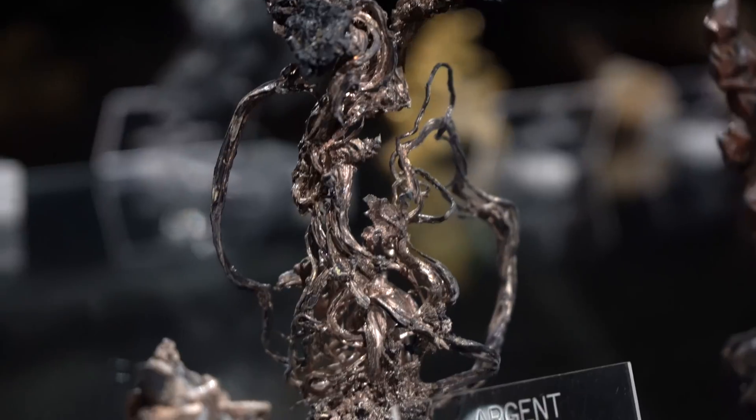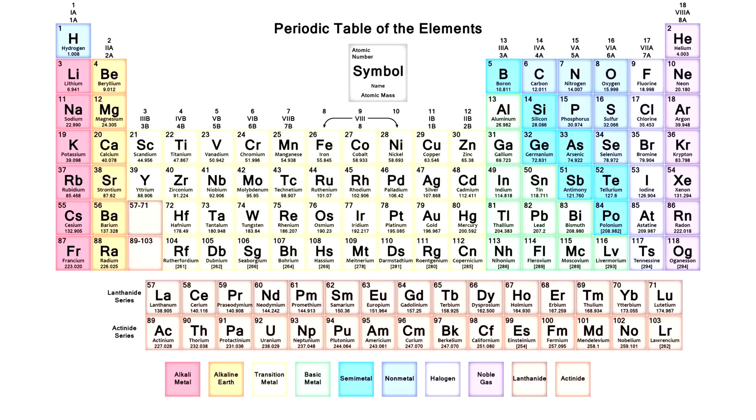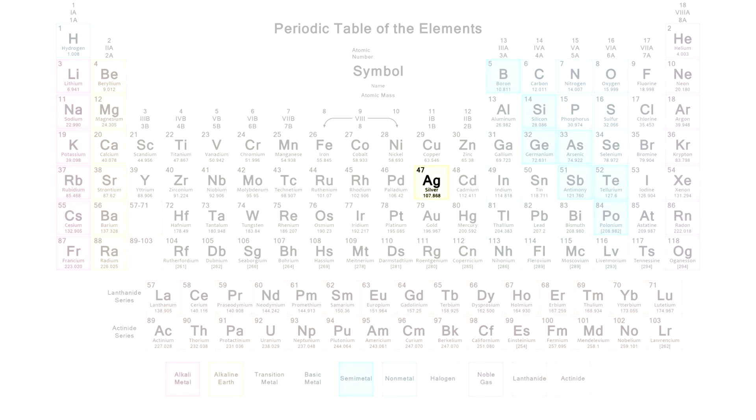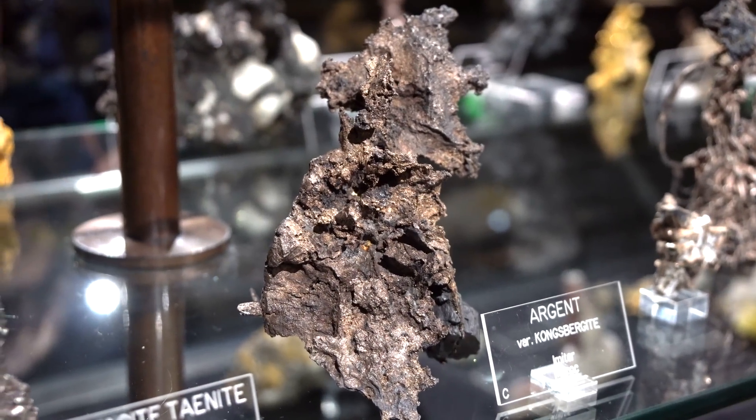All these metals belong to group 11, which is why they possess similar properties such as high density, resistance to oxidation, and deposition in the native form. It's hard to find the exact date when people began using silver as currency.